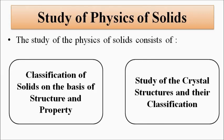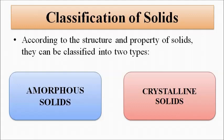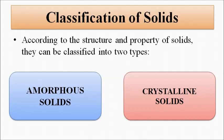Please watch the previous two videos on basic concepts related to semiconductor physics and physics of solids. Solids, depending on their structure and property, can be divided into two types: amorphous and crystalline. Amorphous solids do not have any proper pattern or arrangement in their atomic structure, and their properties — mechanical, optical, magnetic, electrical — are the same throughout the entire solid material.